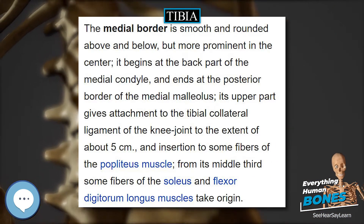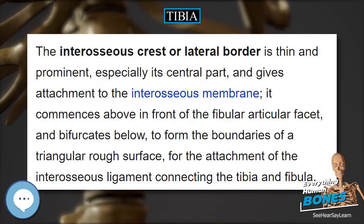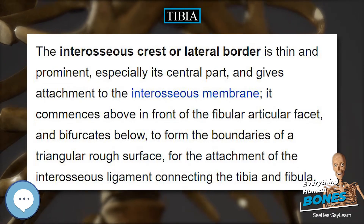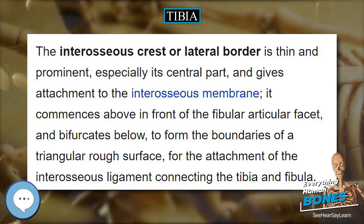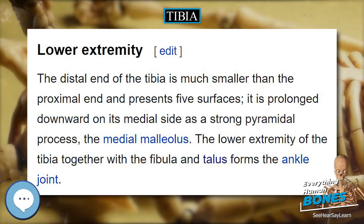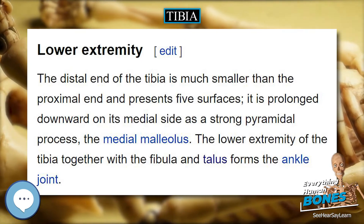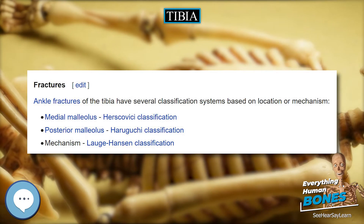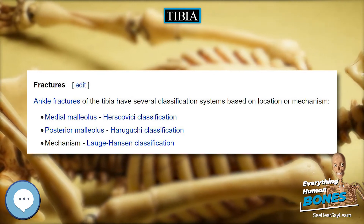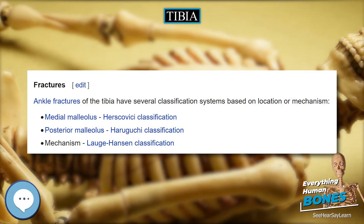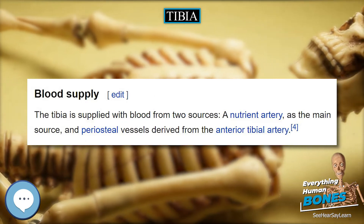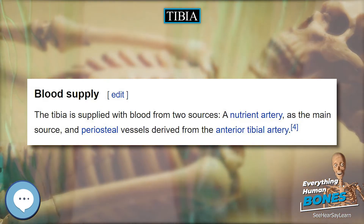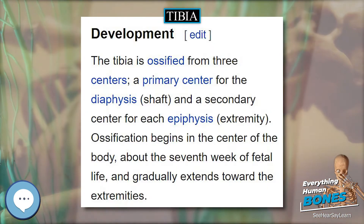Beneath the condyles is the tibial tuberosity, which serves for attachment of the patellar ligament, a continuation of the quadriceps femoris muscle. Facets. The superior articular surface presents two smooth articular facets. The central portions of these facets articulate with the condyles of the femur, while their peripheral portions support the menisci of the knee joint, which here intervene between the two bones.